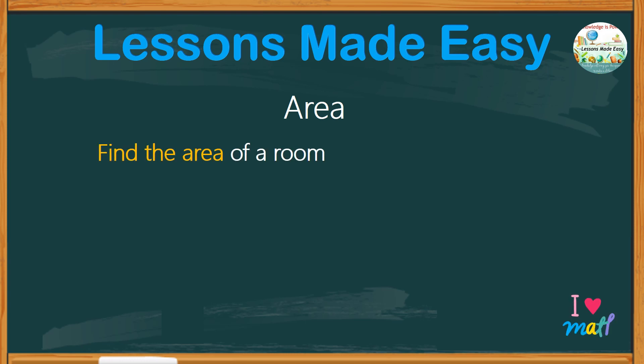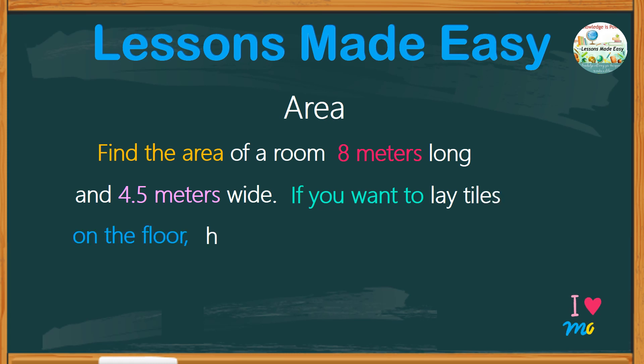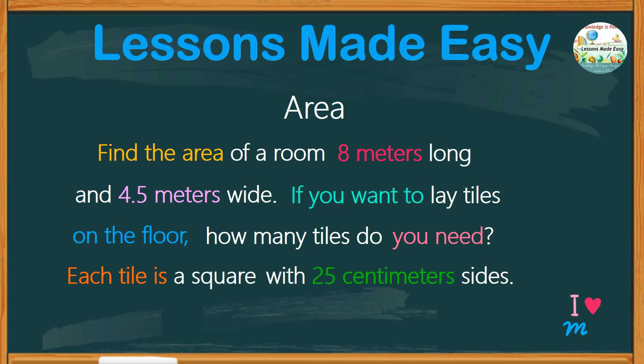Find the area of a room 8 meters long and 4.5 meters wide. If you want to lay tiles on the floor, how many tiles do you need? Each tile is a square with 25 centimeters sides.